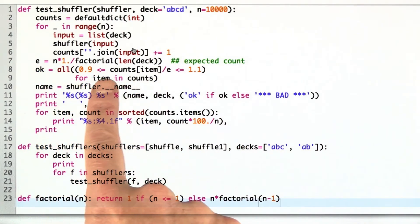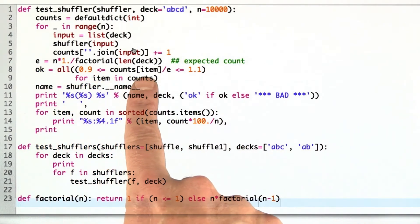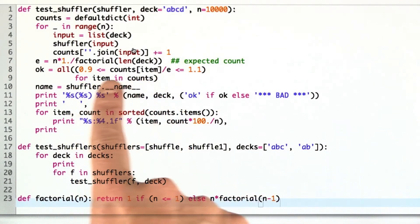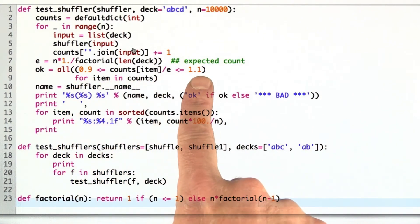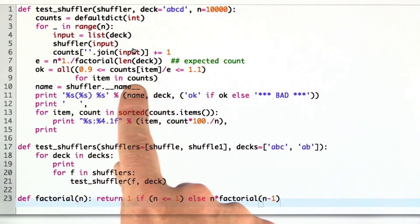Then we say that the result is okay if the counts for each item, the ratio of the counts to the expected value should be about 1. We're going to say if it's within 0.9 and 1.1 of what we expect, then that's okay. If any item doesn't have that, then it's not okay.